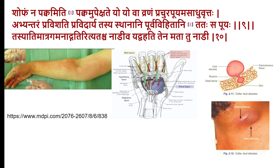When pus forms, it follows the path of least resistance, usually to the surface. However, if drainage is delayed and pressure increases, pus may spread into neighboring tissue depending on anatomy. A frequent example is hand infections: if pus forms below the palmar fascia — a rigid tissue — it cannot reach the surface and instead tracks toward the forearm through the carpal tunnel along with the flexor tendons.